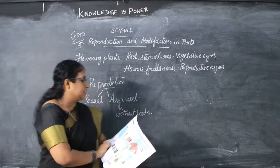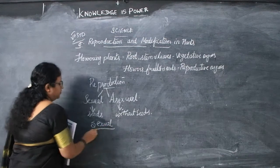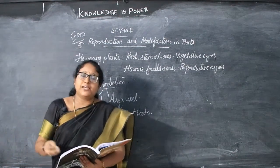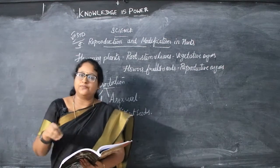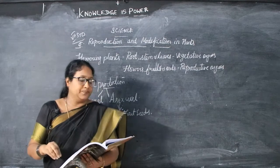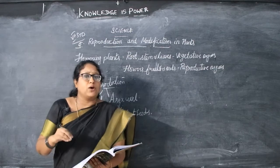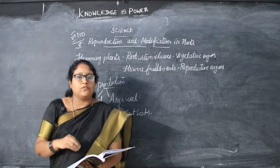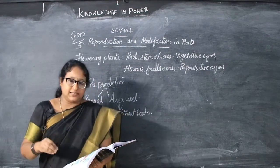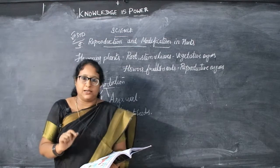First we will see sexual reproduction. In sexual reproduction, seeds are produced from the flower by the process of pollination and fertilization. To understand how seeds are formed from the flower, first we have to see the parts of the flower.